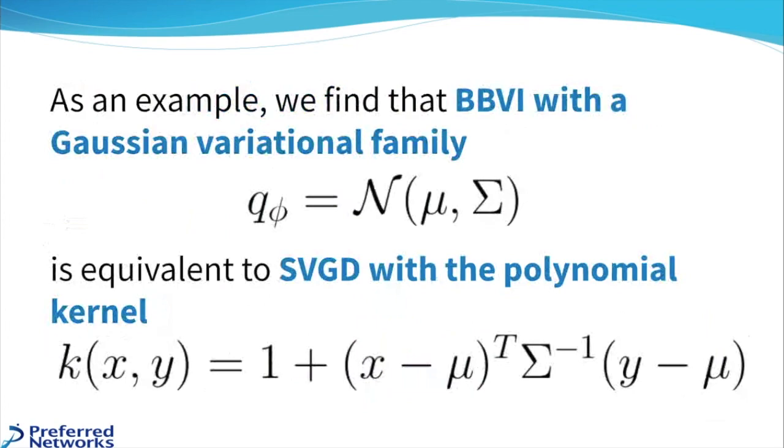For example, we find that BBVI with a Gaussian variational family is actually equivalent to SVGD with this polynomial kernel.